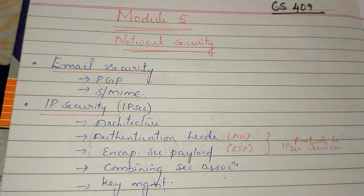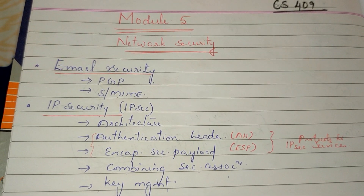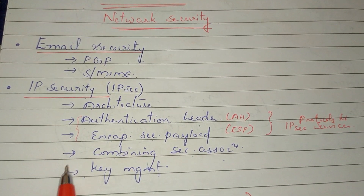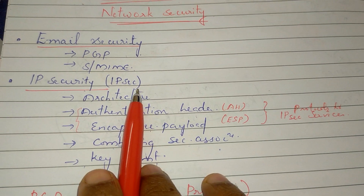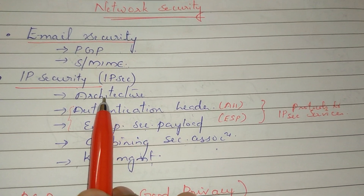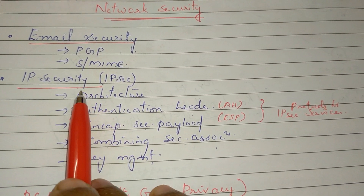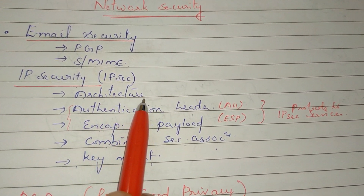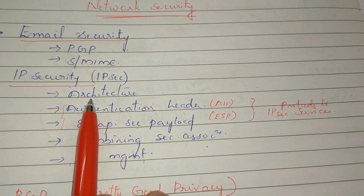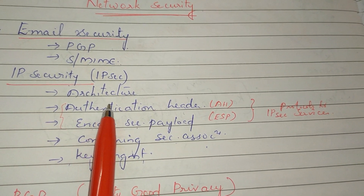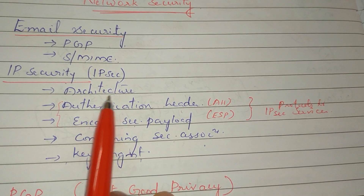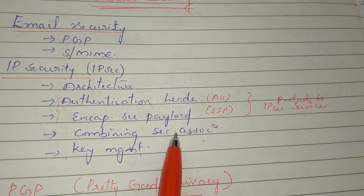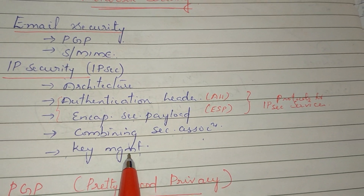In the 5th module, we will be talking about Network Security. First, we will be talking about IP Security Architecture. Then, we will be talking about the two protocols, Combination and Key Management.